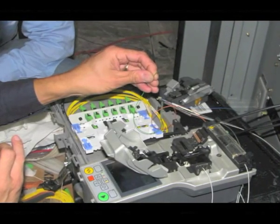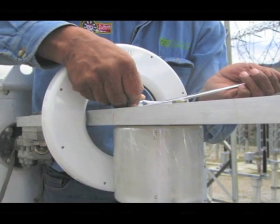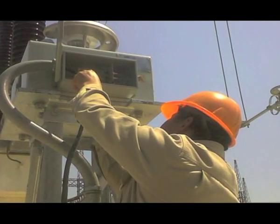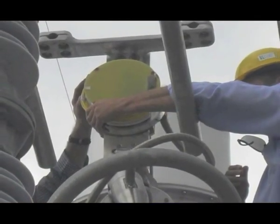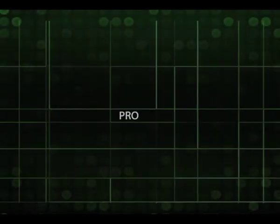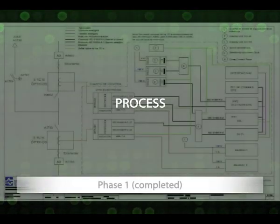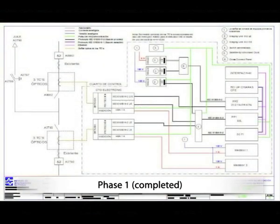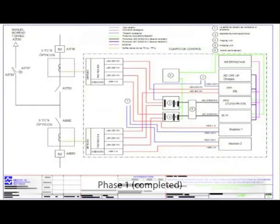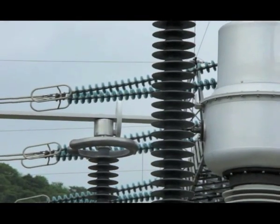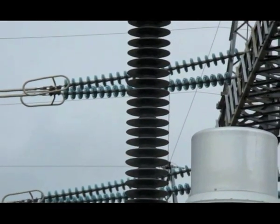Implementation of fiber optic technology on instrument transformers within a protective scheme for a 400 kilovolt A3T90 transmission line from the substation Manuel Moreno Torres to the substation El Juli. The first part of the scheme required the world's first pilot project to evaluate instrument transformer performance for electric current measurement, which uses fiber optic technologies developed by different manufacturers.